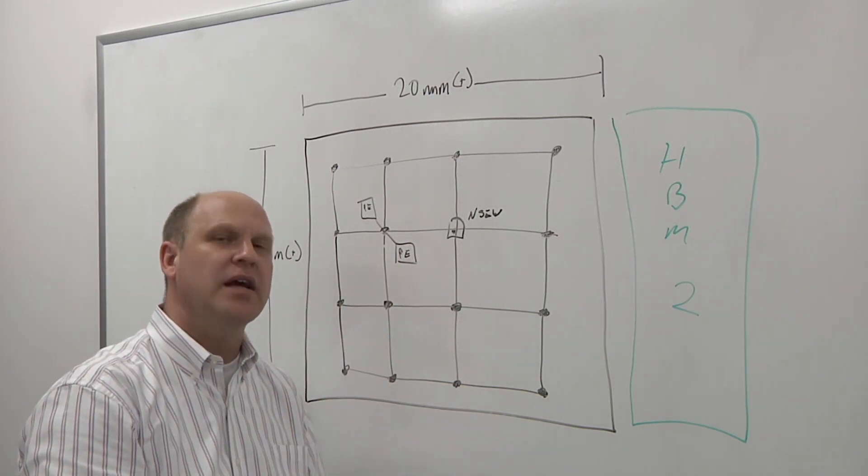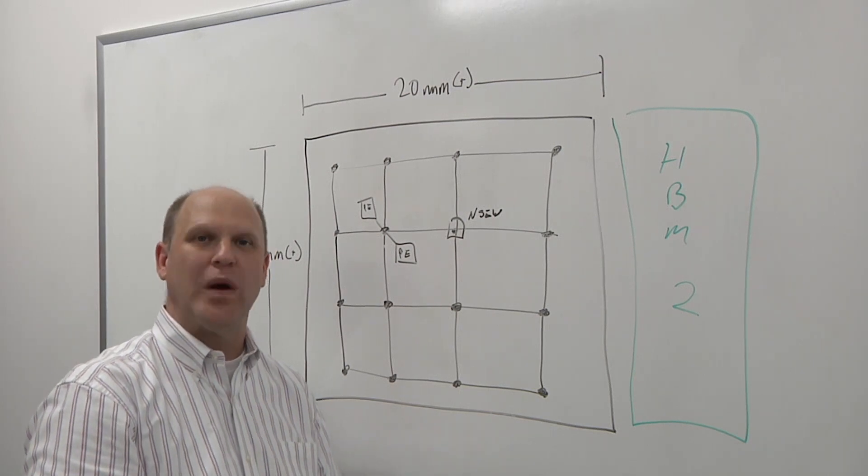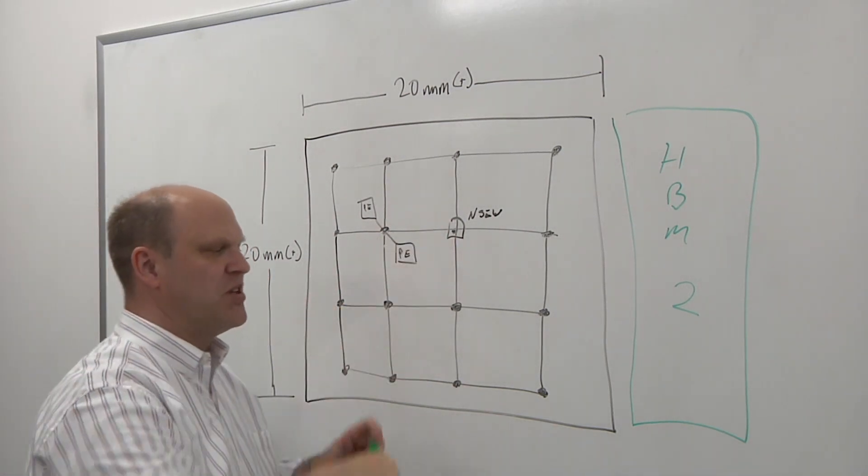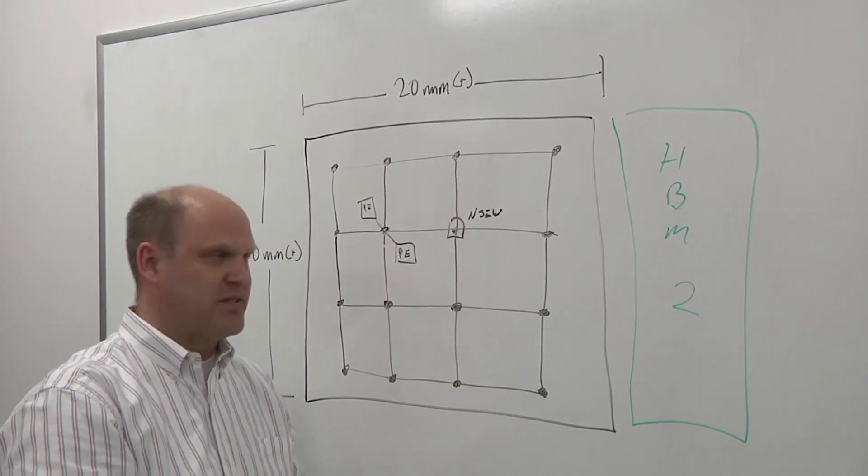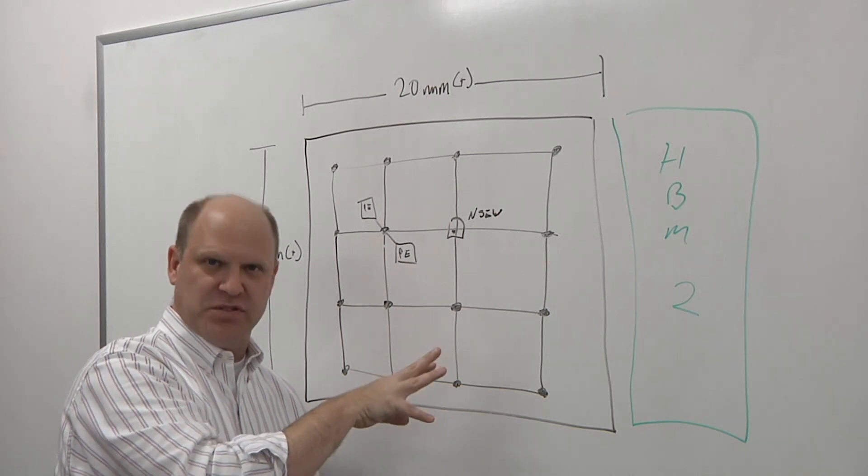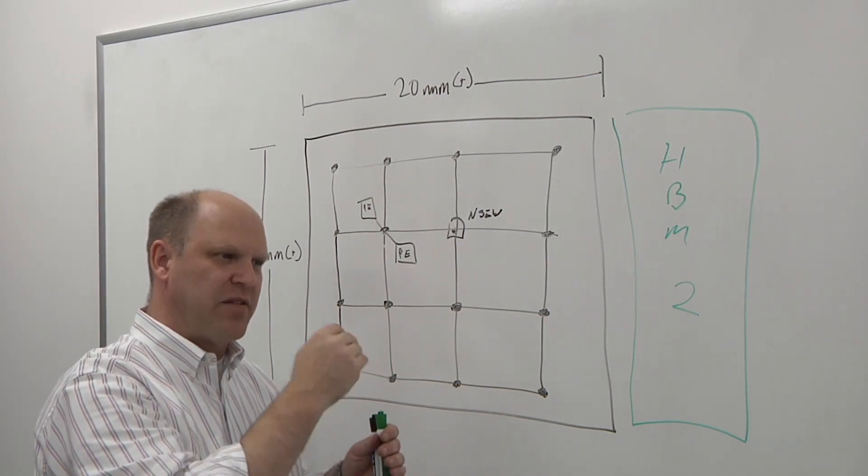Because what's happening in a neural net is, for example, let's talk about weights. When you're multiplying weights by a matrix of different neurons, those weights have to be transmitted to all the processing that's going on for those neurons.